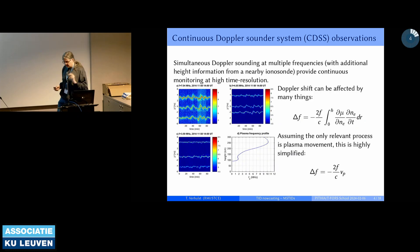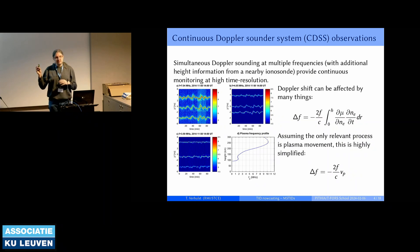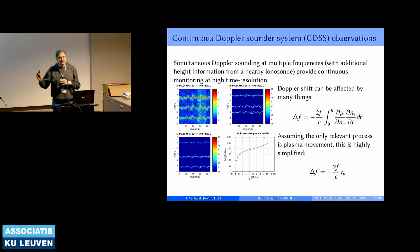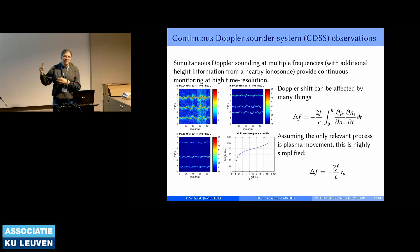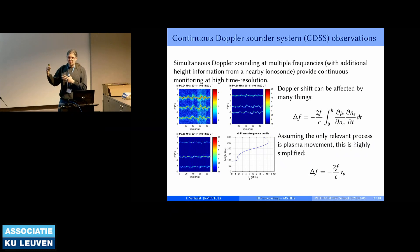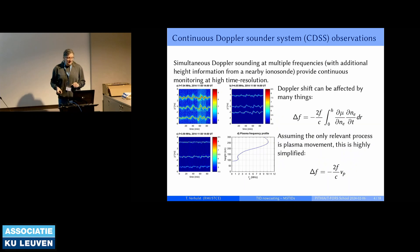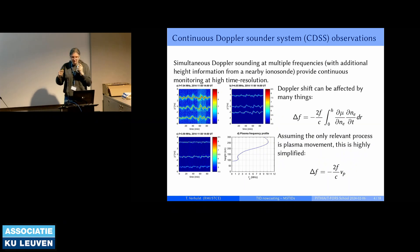The big advantage of the Doppler sounder is that, in the way I will explain here, this can actually be done automatically in real time or at least near real time, and this will also allow us to extract various features of the TID. There are, on the other hand, also some disadvantages which I will mention.